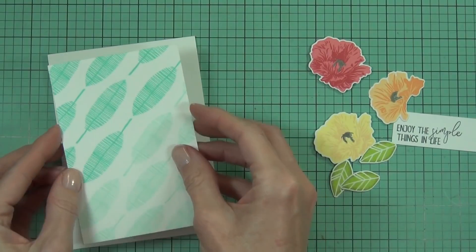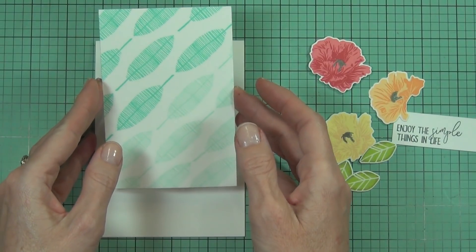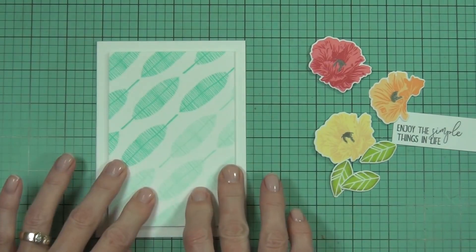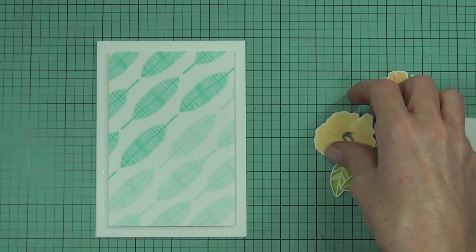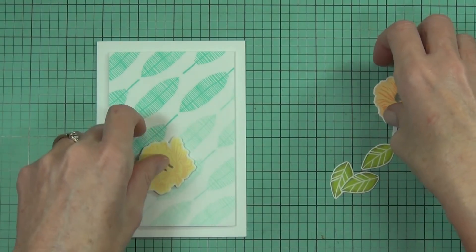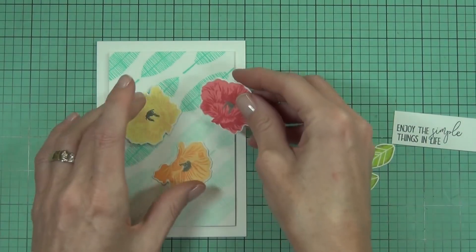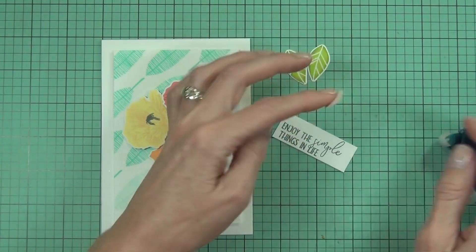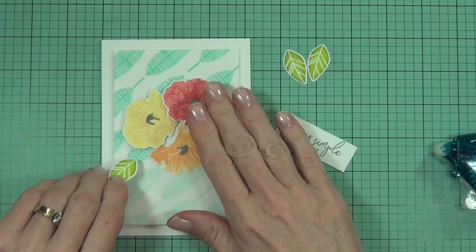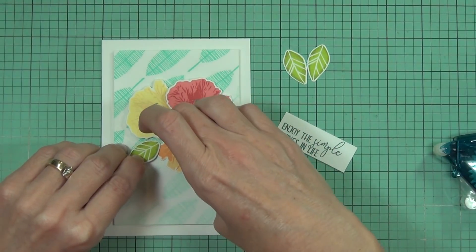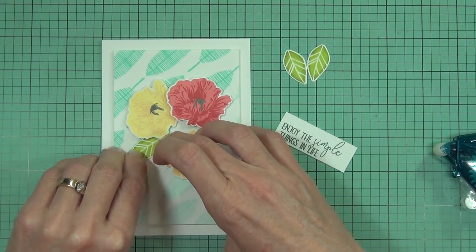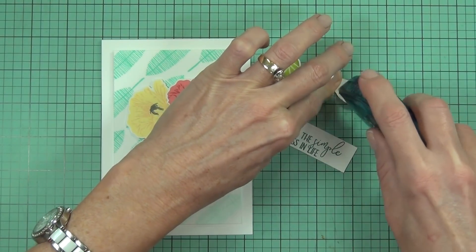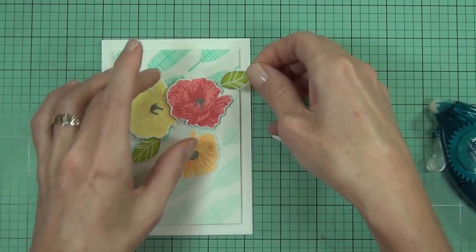Now it's time to put my card together. I've got a top fold card and I've added some foam to my background, cut down to fit the card front, just leaving a light white border. I'm popping up some of my flowers and adding tape runner to the leaves and the orange flower. It's good to have different heights for your embellishments, it adds interest to your card.